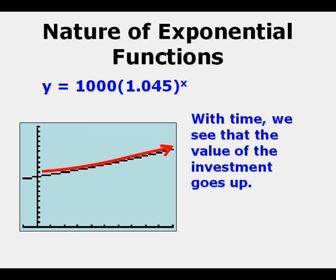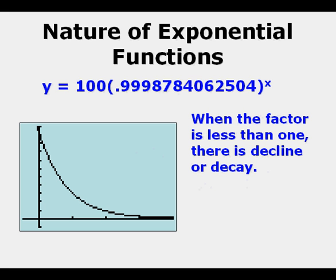Now another function, y equals 100 times .9998, etc., to the power of x. Here we have a situation where the factor is less than 1, and so there is decline or decay.